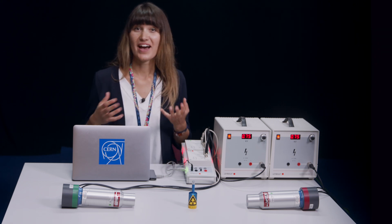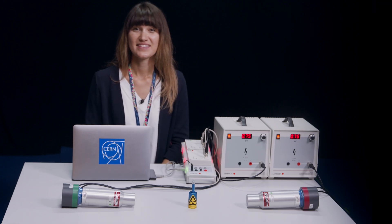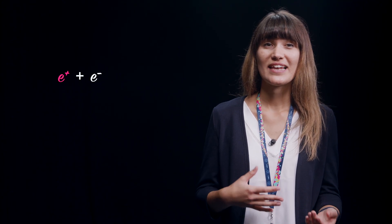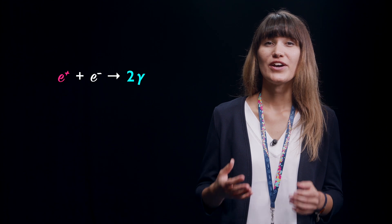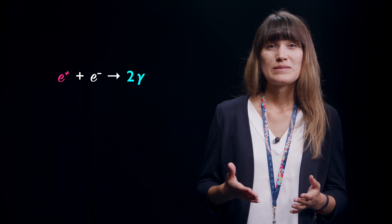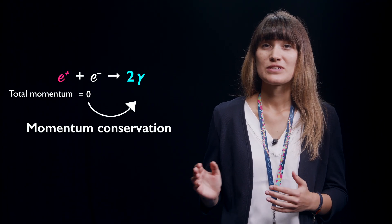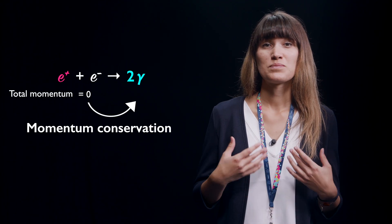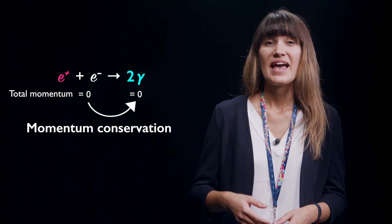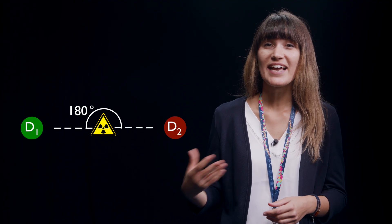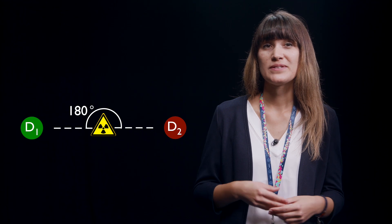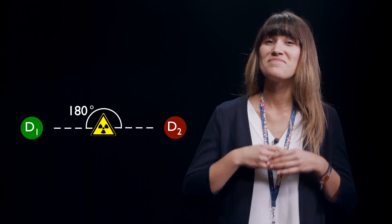For which setup did you observe a higher coincidence count? Did your prediction match the observation? In any case, let's explain our observation. The positrons emitted by the sodium-22 annihilate with electrons of the surrounding and they can transform into two photons. We assume that the positron and the electron were at rest right before they annihilate. That means that the total momentum was zero. Because of momentum conservation, the total momentum of the two photons produced in the annihilation process will also be zero. And this is only possible if the photons move in exactly opposite directions. Consequently, the second configuration with a 180 degrees angle between the two detectors and the radioactive source will lead to a much higher coincidence count.